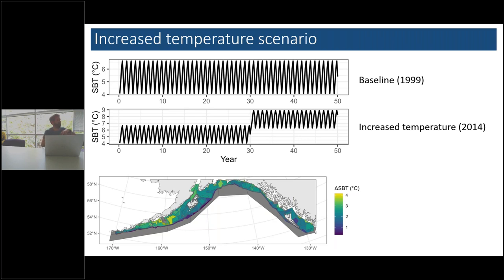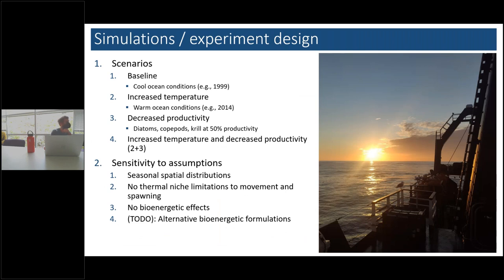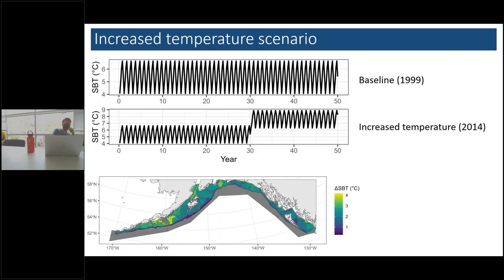The panel at top shows the baseline — bottom temperature averaged across the whole model domain, one year of forcing repeated for 50 years. That's not unusual for models like Atlantis — pick one year of realistic forcing and loop it over time, especially when you're not interested in temporal variability. For the warm scenario, the first 30 years use the same forcing as baseline, then after 30 years, you start applying the warm forcing for 20 years.